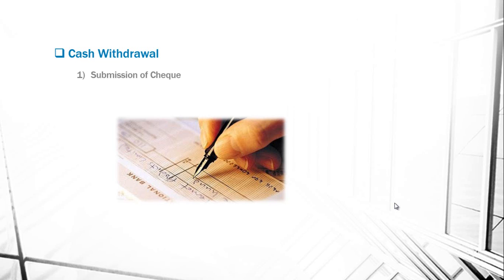Cash withdrawal is the second important function of a bank account, which is performed by the customer in different steps. The first step is submission of a check: the customer submits the check at the counter. The bank officer verifies the entries of the check — the date, amount in words and figures, and the signature of the account holder — and also checks the sign on the back of the check.